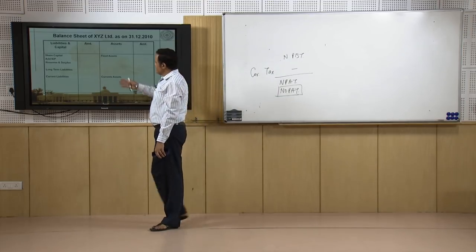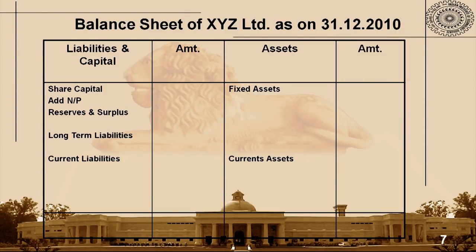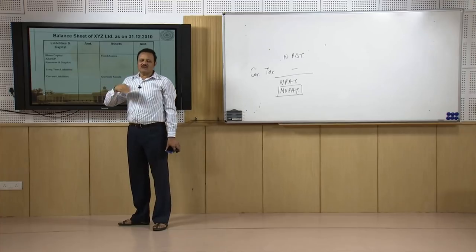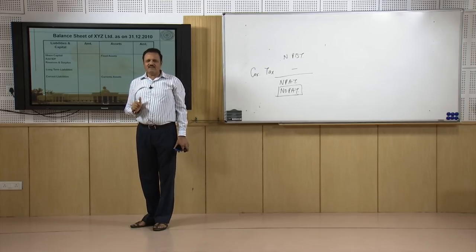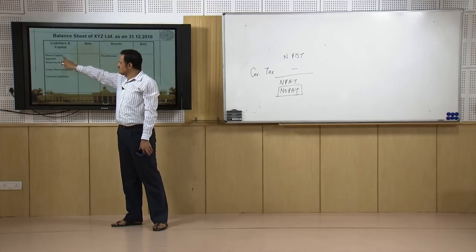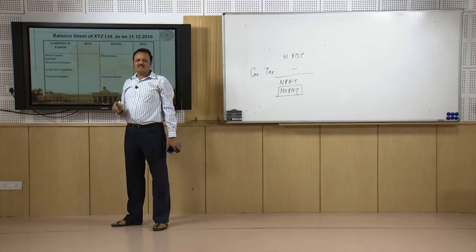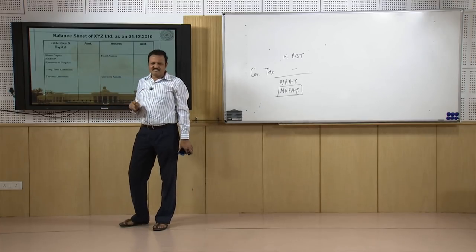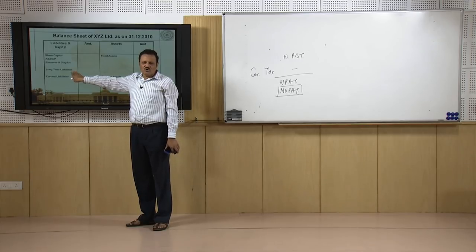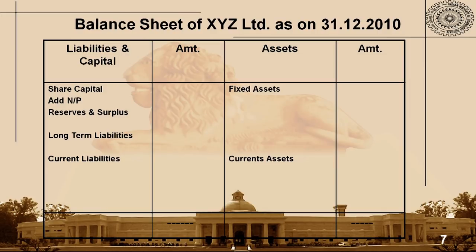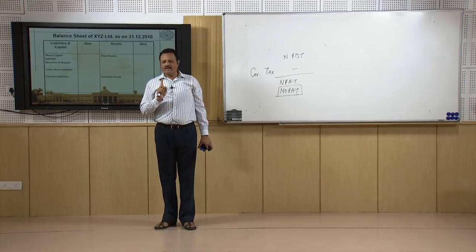On the liabilities and capital side, the first item is share capital — the owner's own investment. Capital keeps increasing when you earn profit: if you invested 30,000 and earned 3,000 profit without taking any dividend, your capital fund appreciates to 33,000. Then there are reserves and surpluses, long-term liabilities — loans borrowed from banks or financial institutions for more than one year — and current liabilities, which are borrowed funds for a maximum period of one year.